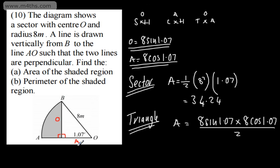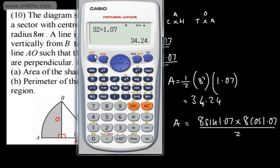You can simplify this if you like, or it can go straight in the calculator. Make sure we're in radians mode, there'll be a little R there. Shift, mode, 4. So if I do this, I've got 8 sine of 1.07, I'm going to multiply this by 8 cos of 1.07 and divide by 2. As stated, you could simplify this instead of dividing by 2.